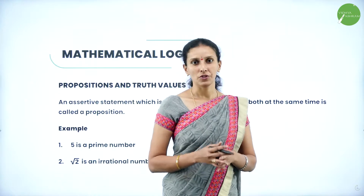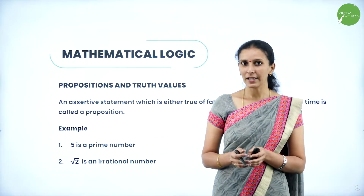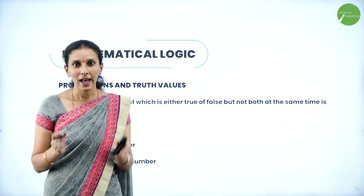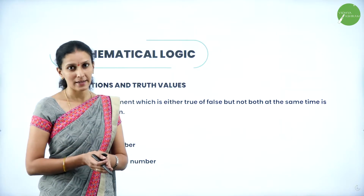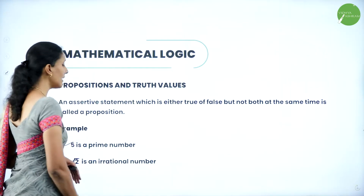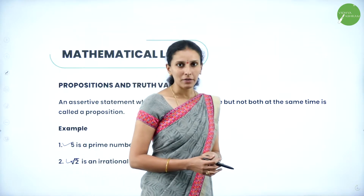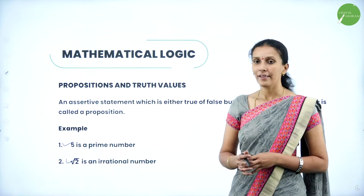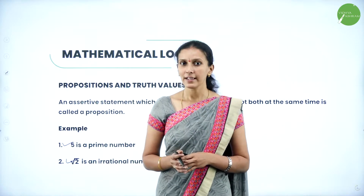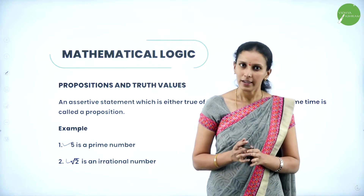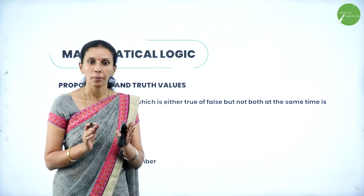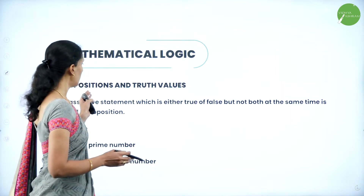Now, what is a proposition? A proposition is a statement that is either true or false, but it cannot be both at the same time. For example, 'phi is a prime number' and 'root 2 is an irrational number' are true. If I say '3 is an irrational number,' it is false. If I say '1 is a prime number,' it is false again. So a statement which is either true or false but not both at the same time is nothing but a proposition.